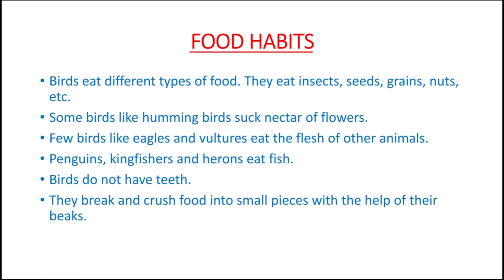Some birds like hummingbirds and sunbirds suck the nectar of flowers. They have a long pointed beak through which they suck the nectar. A few birds like eagles and vultures eat the flesh of other animals. You remember from the first part — eagles and vultures have hooked beaks so they can tear the flesh of other animals and eat them.